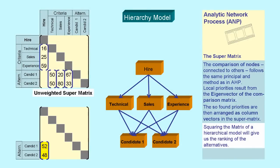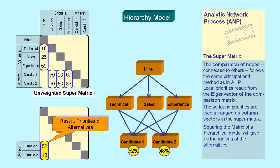Up to this point we use a hierarchical model. For example, squaring the matrix will give us the ranking of the alternatives. In our example, candidate 1 ranks with 52% before candidate 2 with 48%.